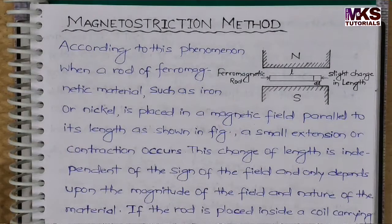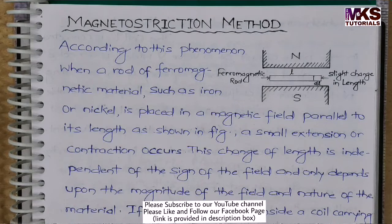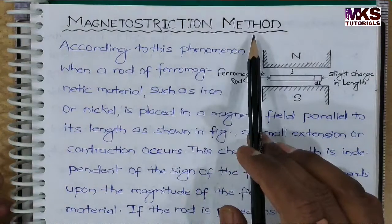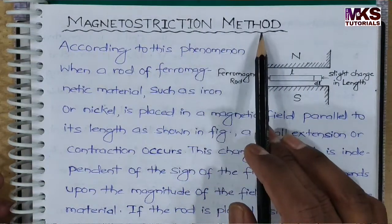Now let's look at the next topic, which is the production of ultrasonic waves. There are two methods: the first is the magnetostriction method and the second is the piezoelectric method. First, let's look at the magnetostriction method, also known as the magnetostriction effect.